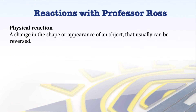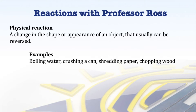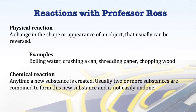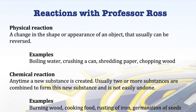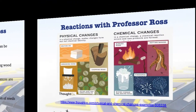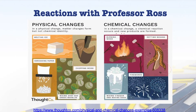A physical reaction is a change in the shape or appearance of an object that usually can be reversed or undone. Examples include the boiling of water, crushing a can, shredding paper, or chopping wood. A chemical reaction occurs any time a new substance is created — usually two or more substances combined to form a new substance. Chemical reactions are not easily undone. Examples include burning wood, cooking food, rusting of iron, and the germination of seeds.